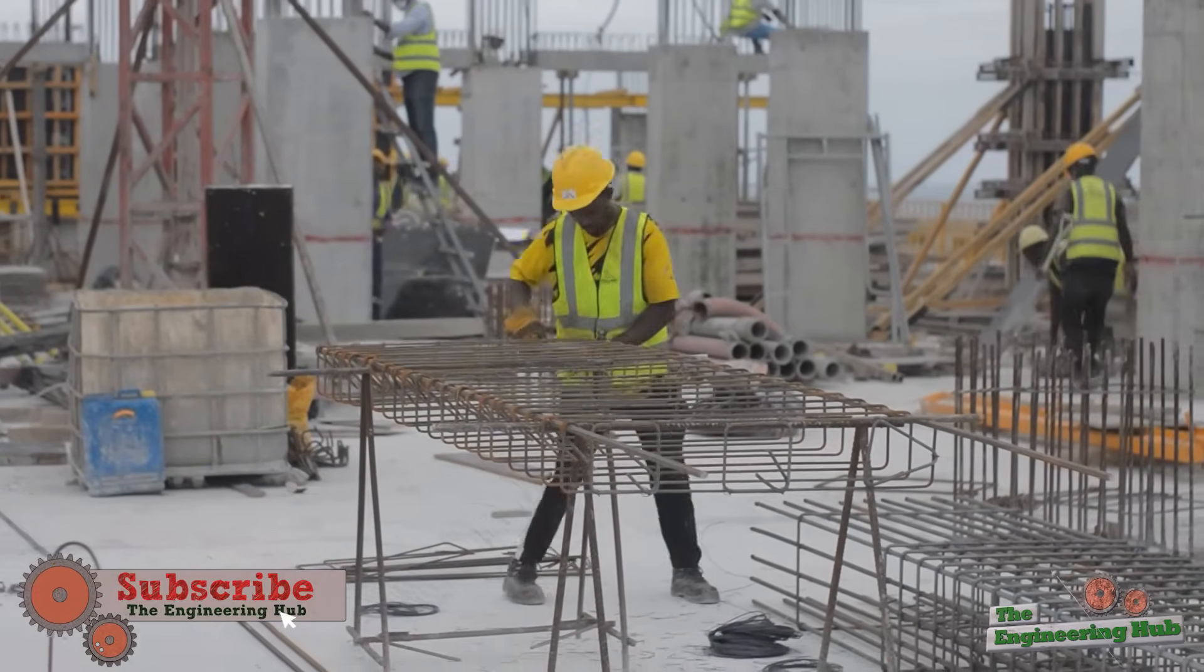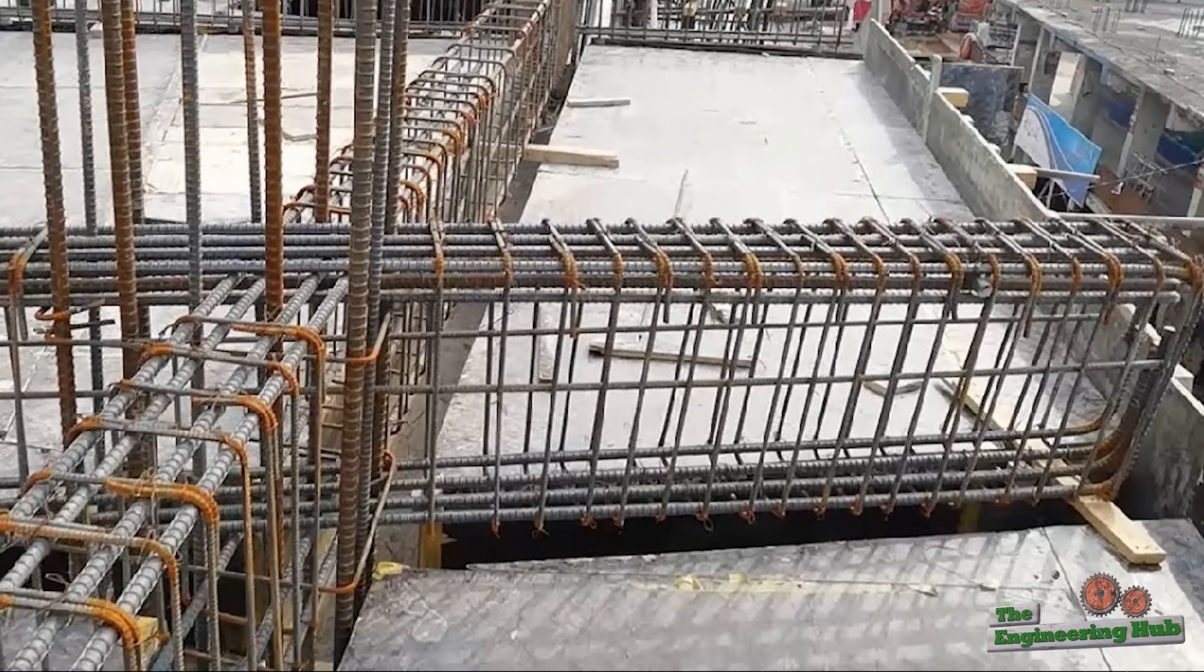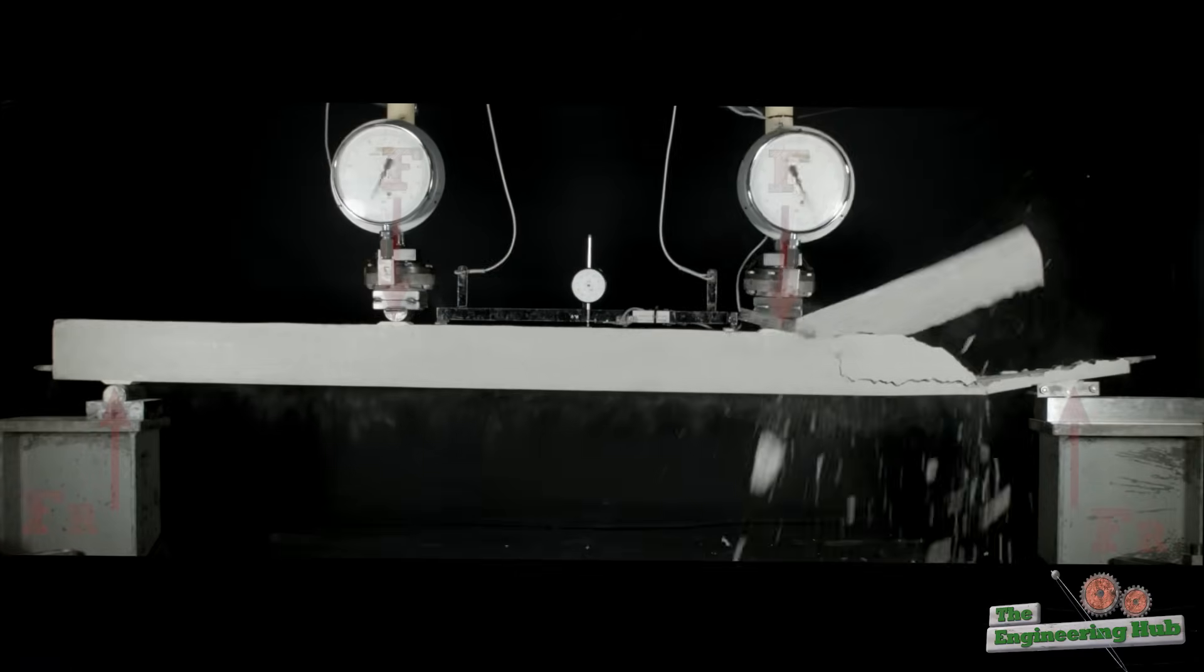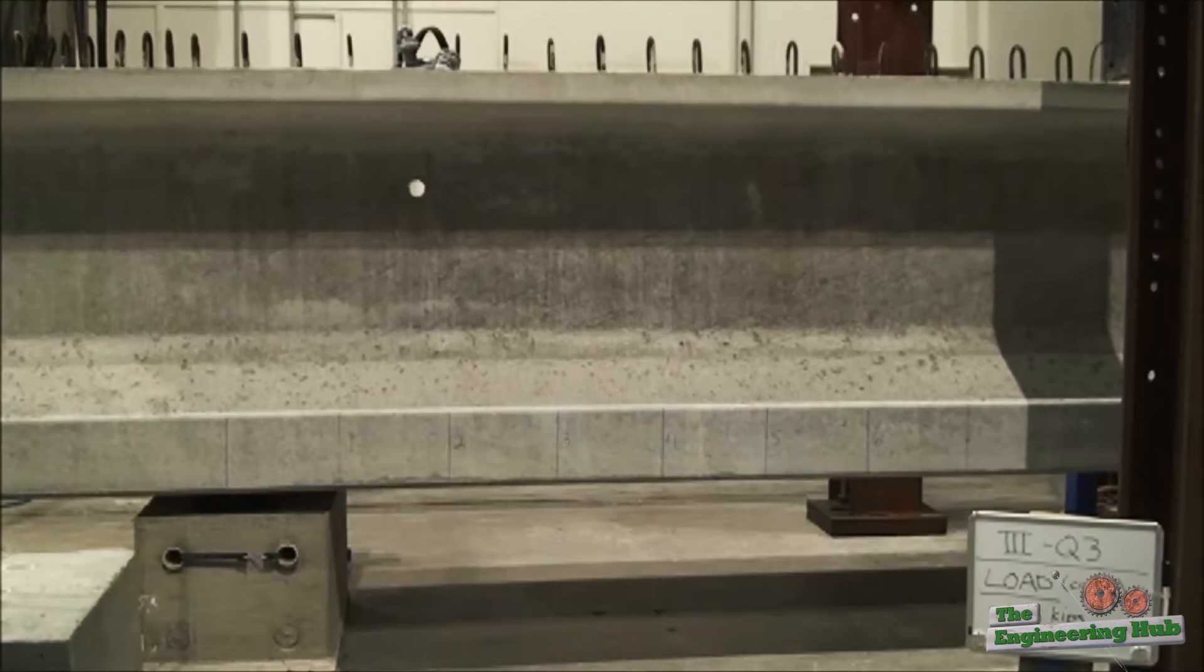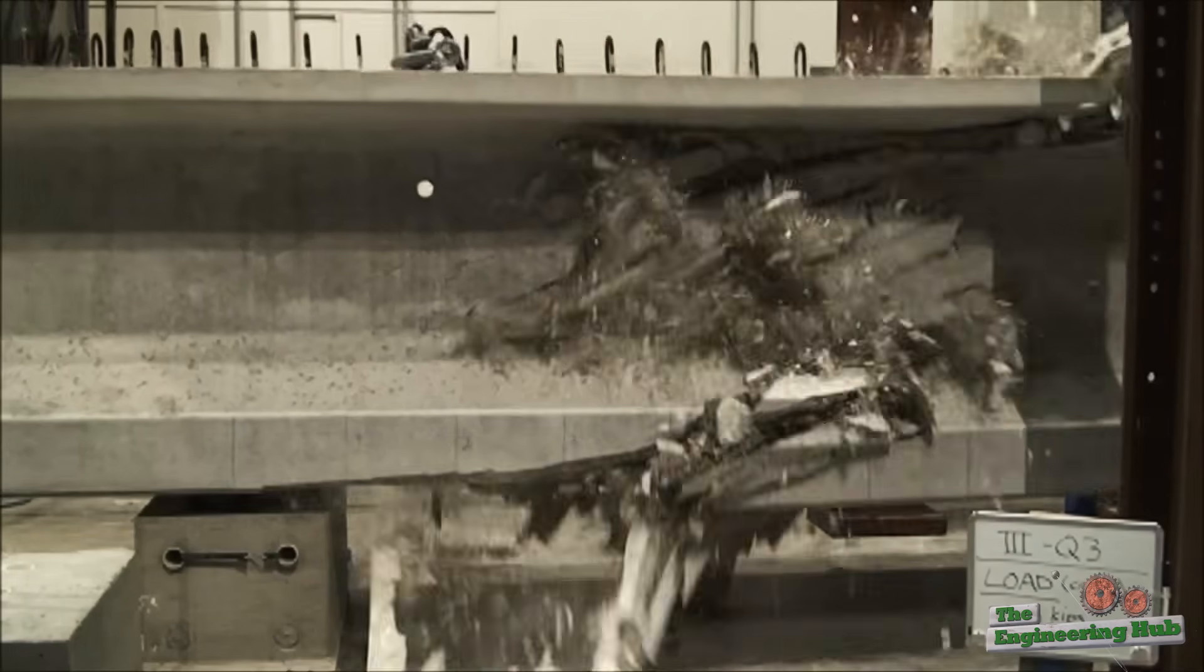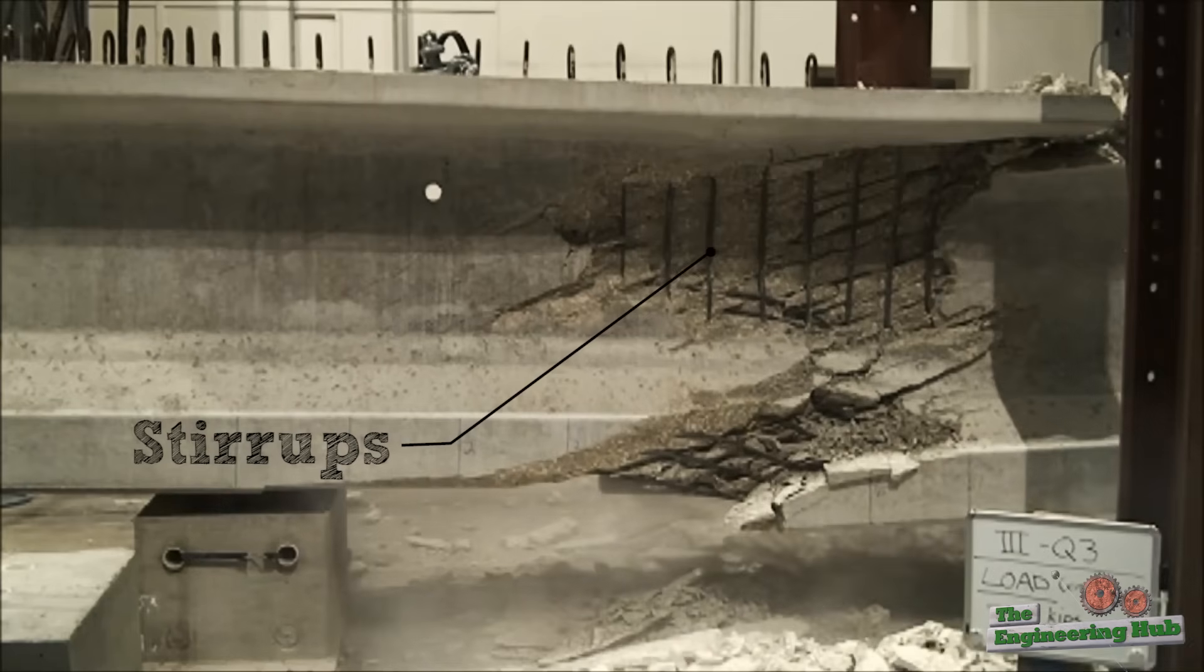Similar to the longitudinal reinforcement, the stirrups are also there to resist stresses which the concrete alone is not great at resisting. These stresses originate from the shear forces mentioned earlier. In fact, stirrups are also often referred to as shear reinforcement due to their purpose in resisting shear forces.